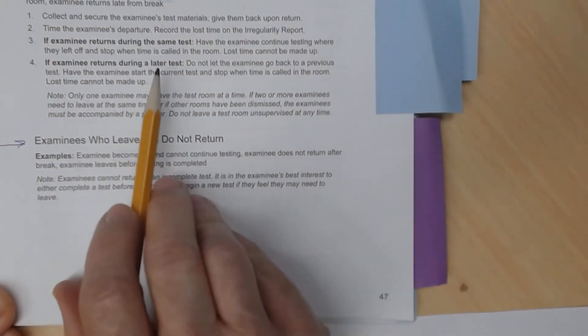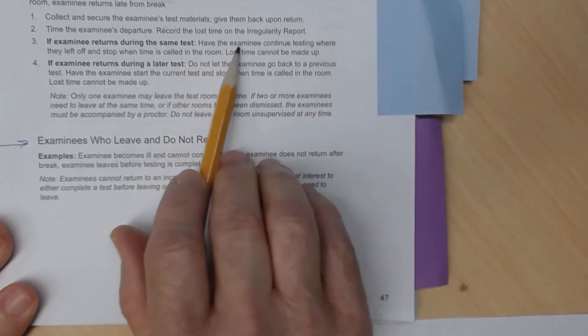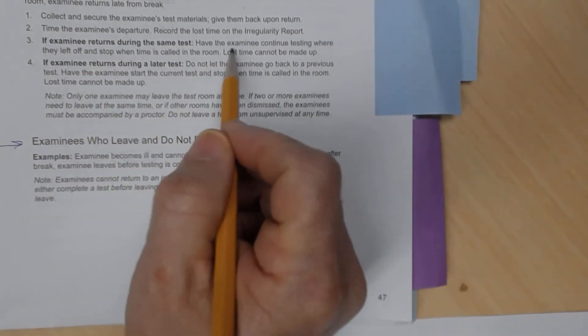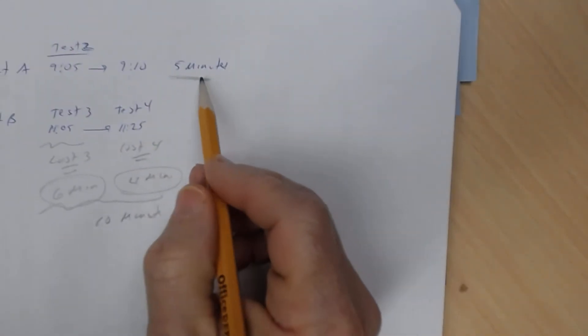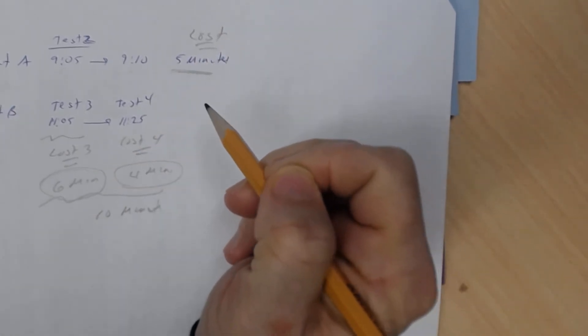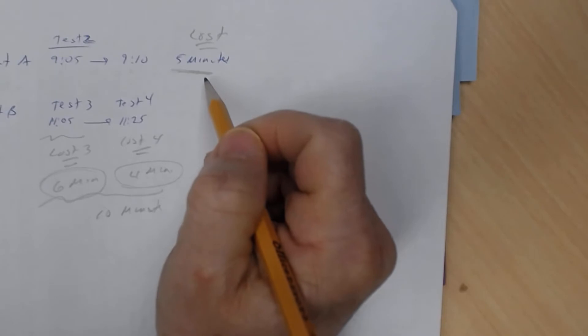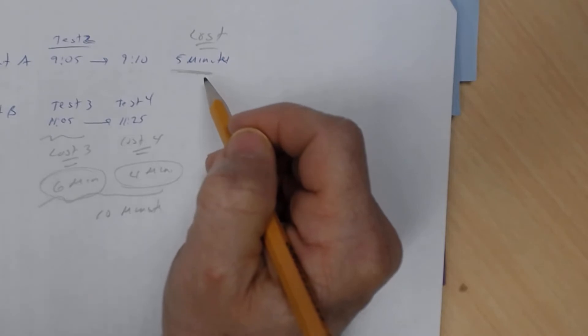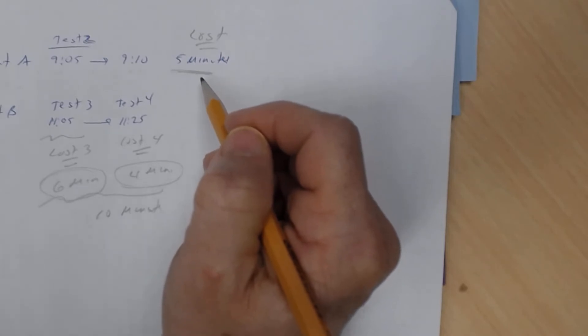If the examinee returns during the same test, have the examinee continue testing where they left off and stop when time is called. The time they lost cannot be made up. That's why it's important to discourage students from leaving — if a student simply needs the restroom, inform them that that time will be lost.